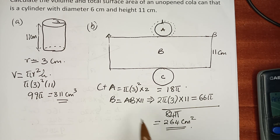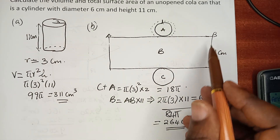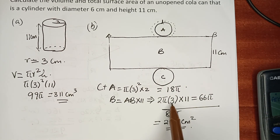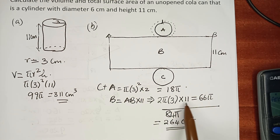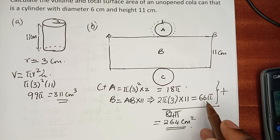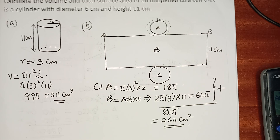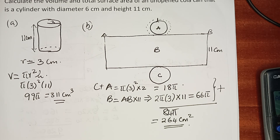To recap: the area of the curved face B is the circumference times the height, which is 2πr × 11 = 2π × 3 × 11 = 66π. Adding the two circular ends, 18π + 66π = 84π. With π = 3.142, the total surface area is estimated to be 264 centimetres squared.